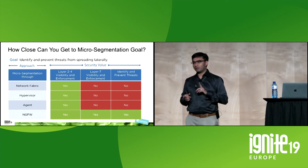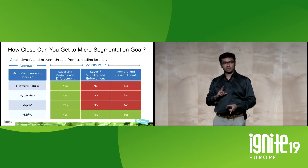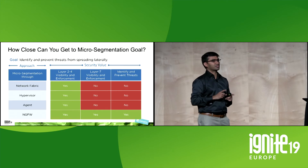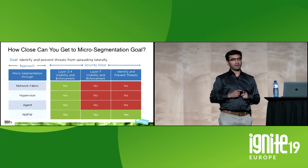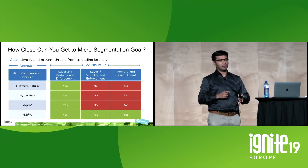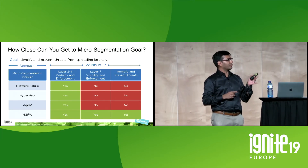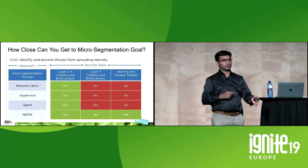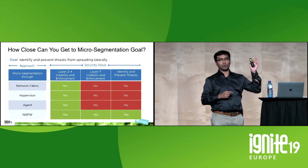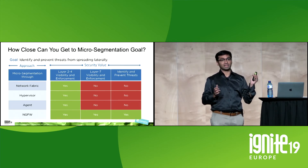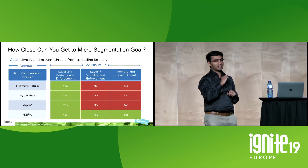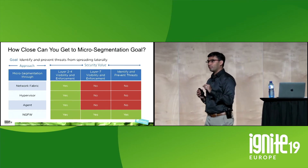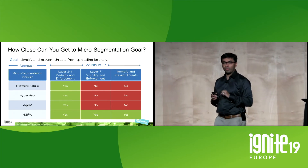The second dimension is security value. Network-fabric-based gives you layer 2 to 4 visibility and enforcement. Neither network fabric, hypervisor, nor agent-based approaches give you layer 7-based visibility and enforcement. If the goal is to identify and prevent the lateral spread of threats, that goal cannot be achieved by those three approaches. Only the next-gen firewall is in a position to give you the best security value from a micro-segmentation perspective.